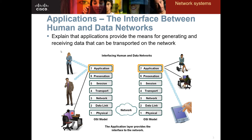The application layer also deals with software that does not access the network. For example, you might just want to watch a video using VLC Media Player, QuickTime, or Windows Media Player. The application layer is going to require certain services which run in the background, allowing us to achieve our goals as end users — even watching a saved video uses the application layer.